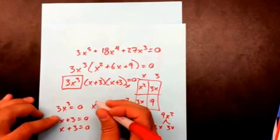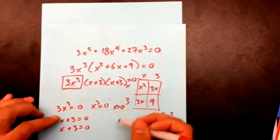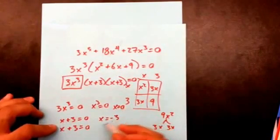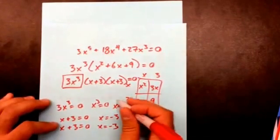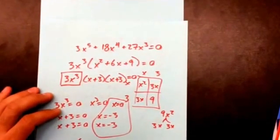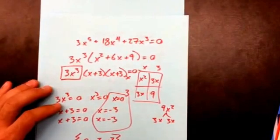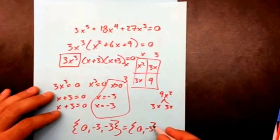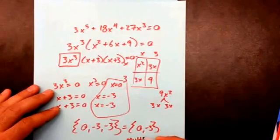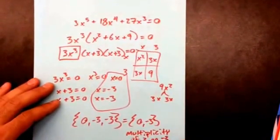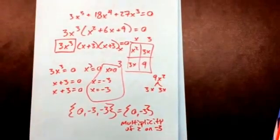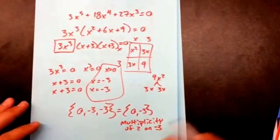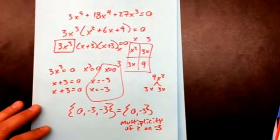For the first factor, dividing by 3 gives x³ = 0, so x = 0. For the repeated factor, subtracting 3 gives x = −3 (twice). In roster notation the solution set is {0, −3} with multiplicity of 2 on −3. Multiplicity means the root appeared more than once — here negative 3 appeared twice.